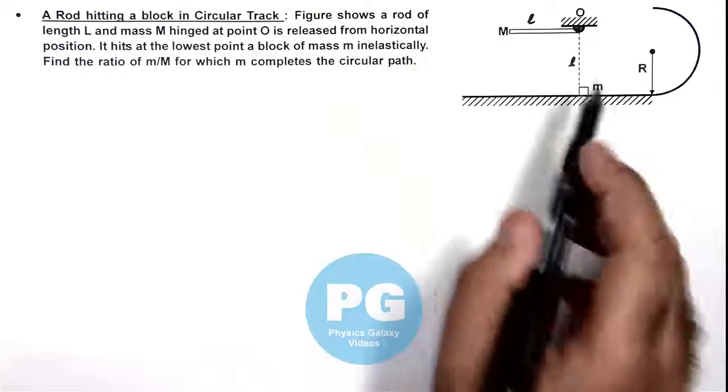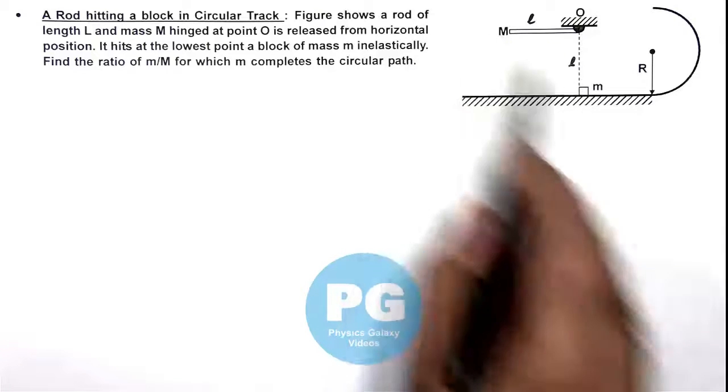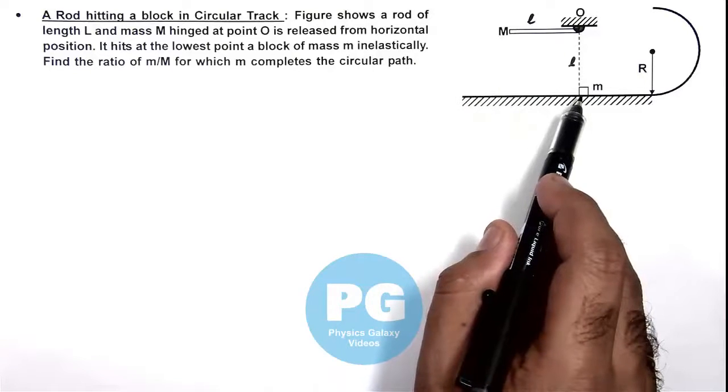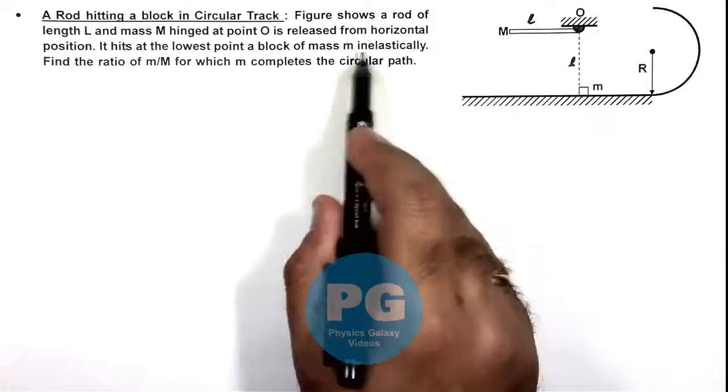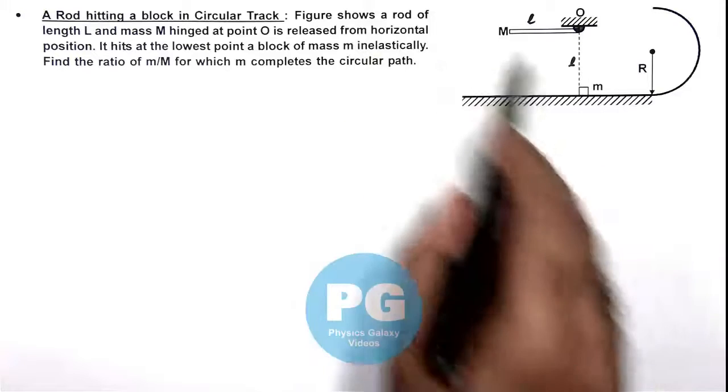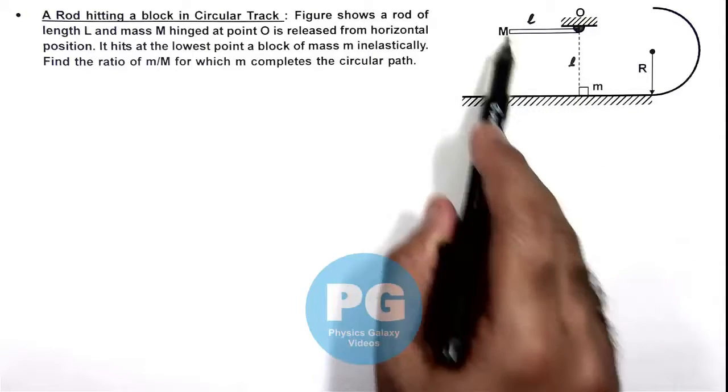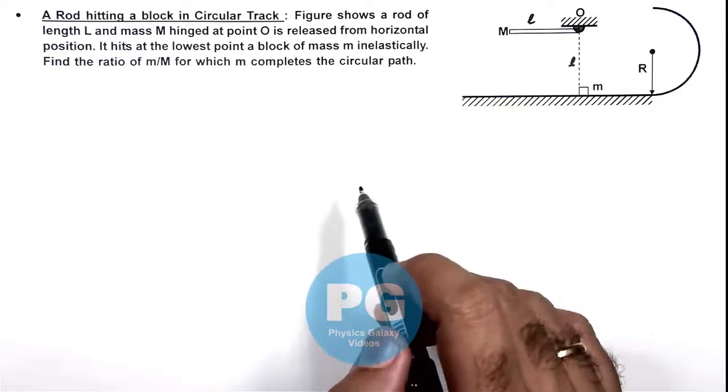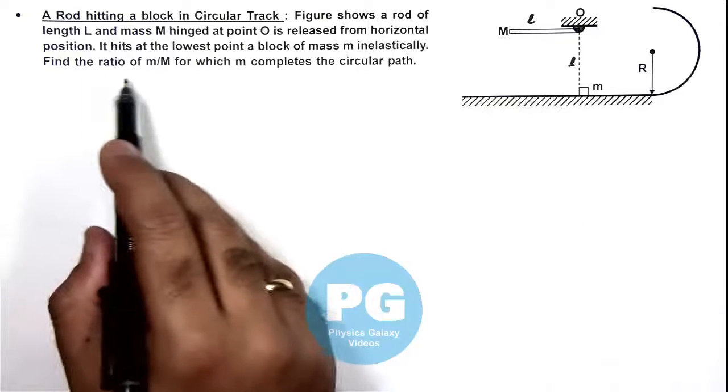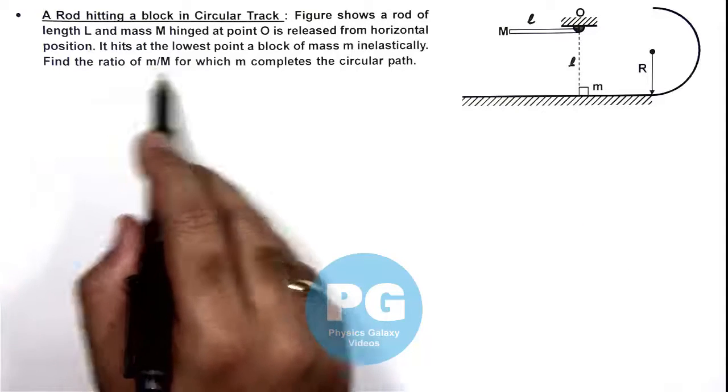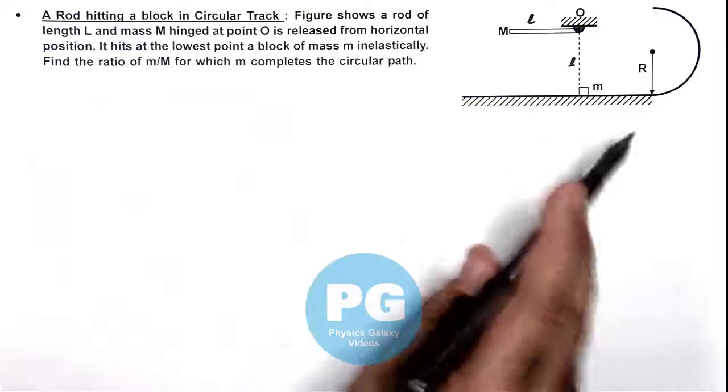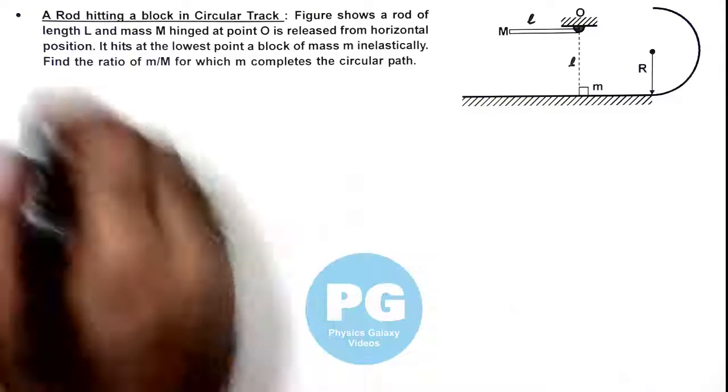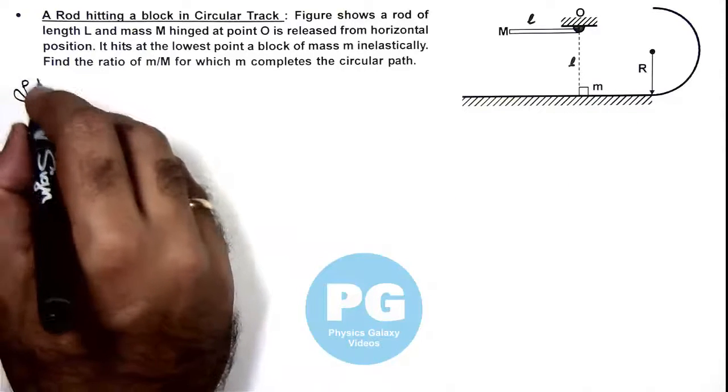That means right after this point, the separation velocity of m and M becomes zero. However, inelastically doesn't mean that they'll stick. So the rod will move further in rotational motion and this small m will continue its translational motion. We are required to find the ratio of small m by capital M for which small m completes the circular path.